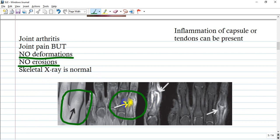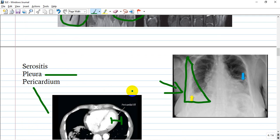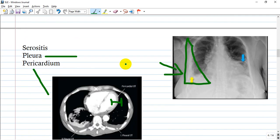Serositis, or involvement of the serosa, can be pleural or pericardial. Look here at this rounded edge - this is a classic pleural effusion. Pericarditis is mostly inflammatory, not empyema or infectious, but can develop infection from stasis and accumulation of fluid.